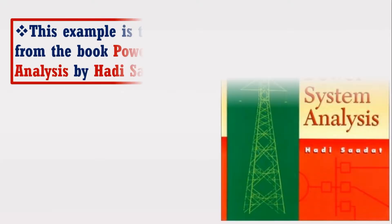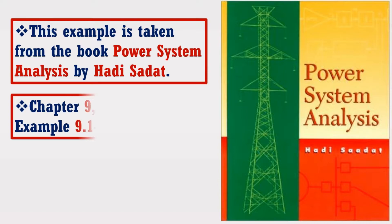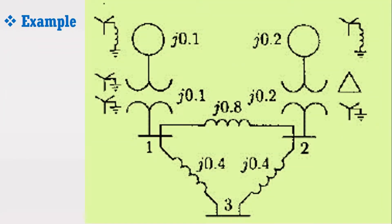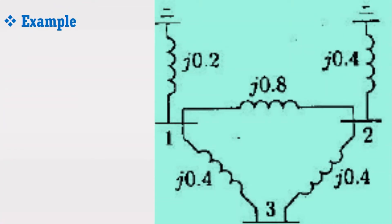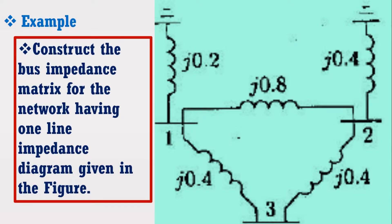For this purpose, I have considered an example from the book Power System Analysis by Hadi Sadat, Chapter 9, Examples 9.1-9.5. Consider the figure which shows the one-line diagram of a simple 3-bus power system. Its simplified per unit impedance diagram is shown in the figure, and we have to find its bus impedance matrix using the MATLAB program.